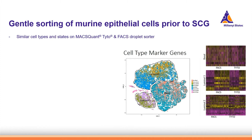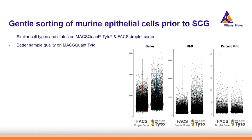First, he observes that the cell types and states between the cells sorted on the Tyto and the FACS droplet sorter are similar. However, when he takes a closer look at the data, he sees that the cells from the MACSQuant Tyto gave more gene reads, indicating a better sample quality.